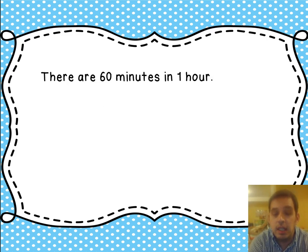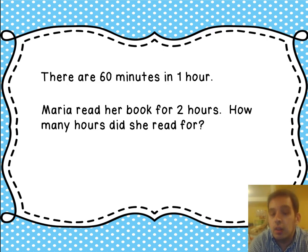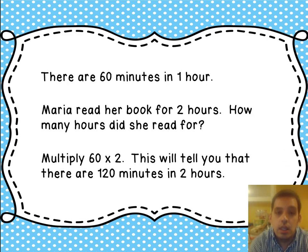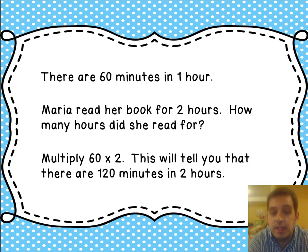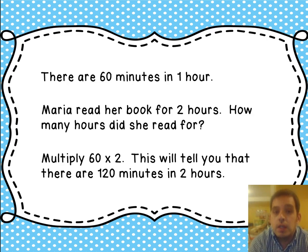There are 60 minutes in 1 hour. Maria read her book for 2 hours. How many minutes did she read for? What we're going to do is take 60, because there are 60 minutes in an hour, and Maria read for 2 hours, and multiply 60 times 2. Or you can use repeated addition and do 60 plus 60. This tells you that there are 120 minutes in 2 hours. So the answer is Maria read for 120 minutes.